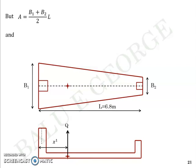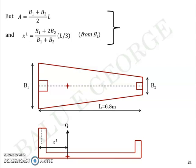Equation 2 is related to x-dash, the distance of the point through which the load resultant acts, which must equal the centroid. So x-dash equals (b1 + 2b2)/(b1 + b2) multiplied by L/3, measured from b1. That is very important. We now have two equations and two unknowns — b1 and b2 — while area required, x-dash, and length L are already known. Solving these two equations gives approximately b1 = 4.89 meters and b2 = 0.99 meters.